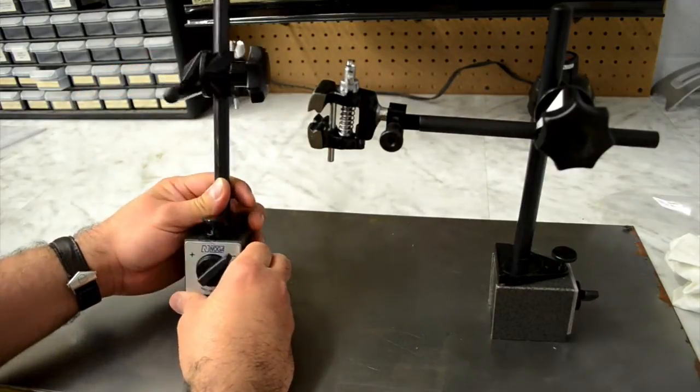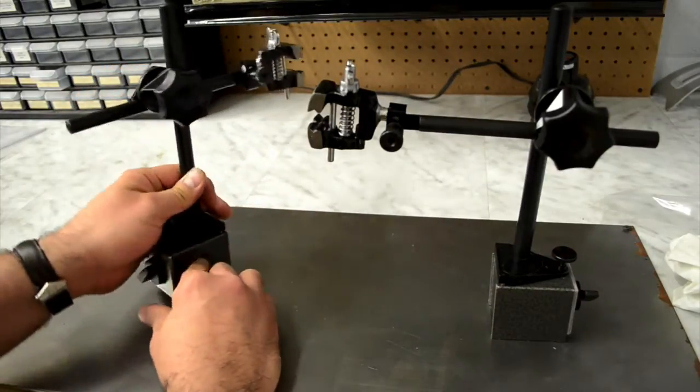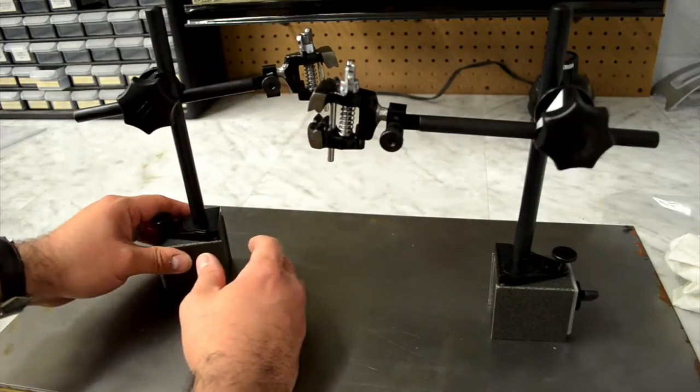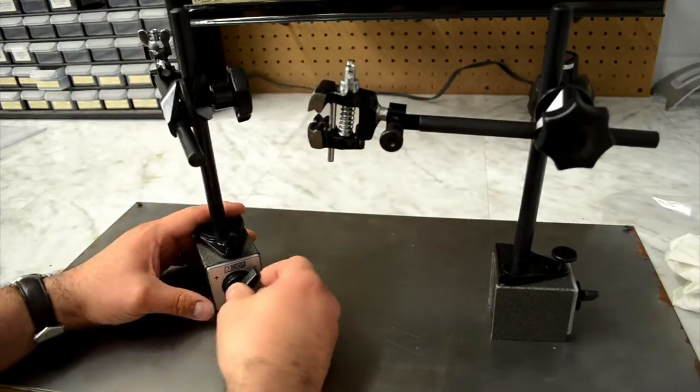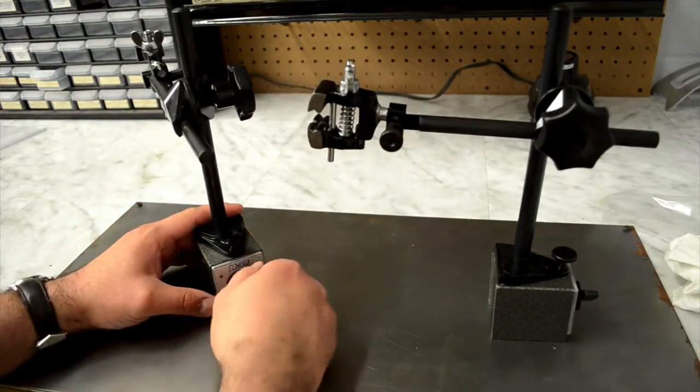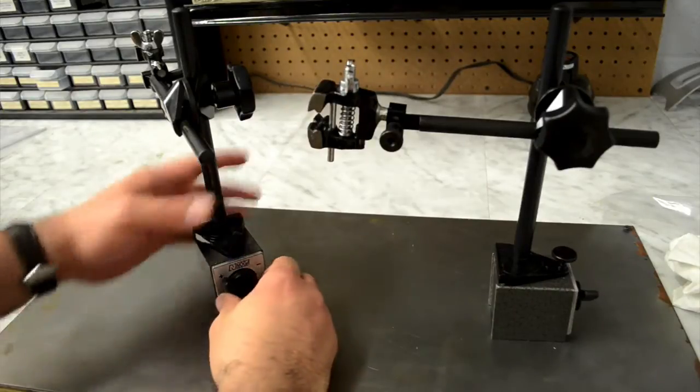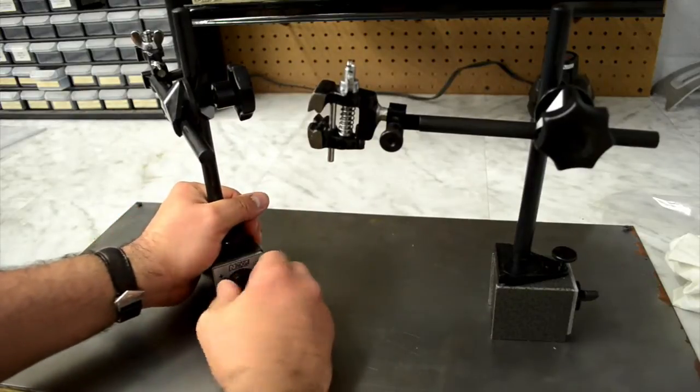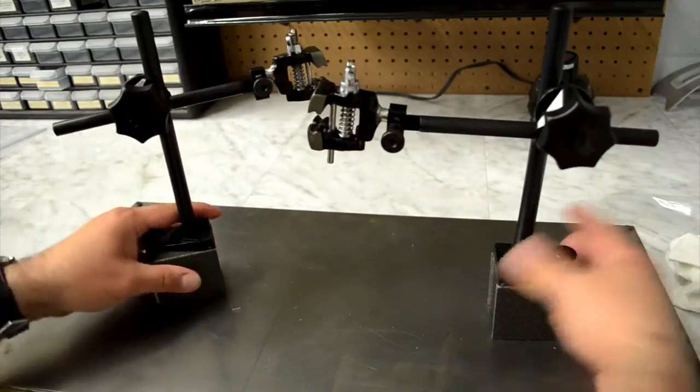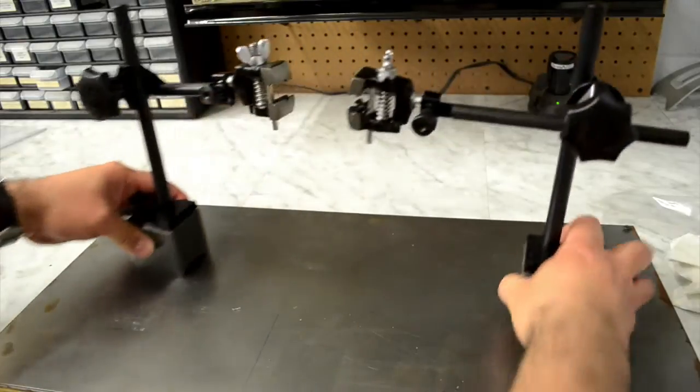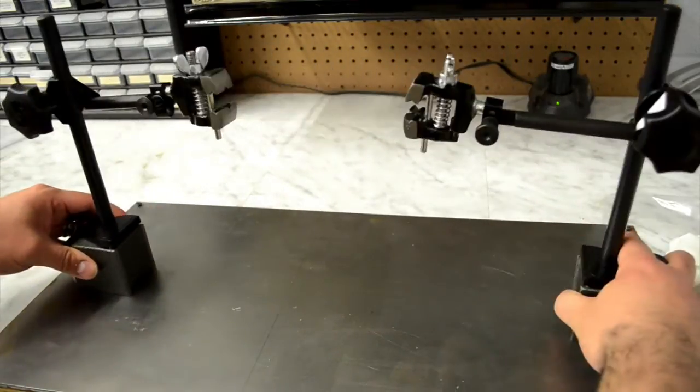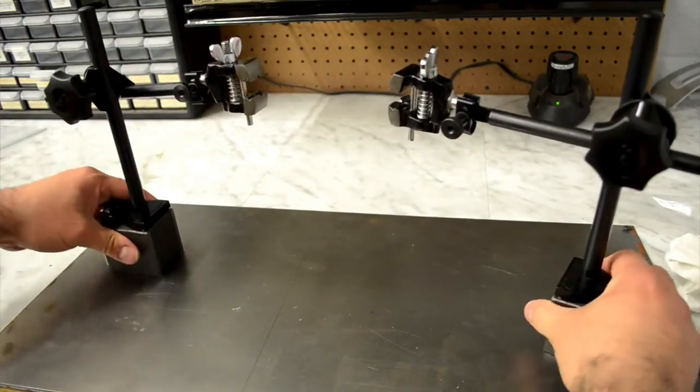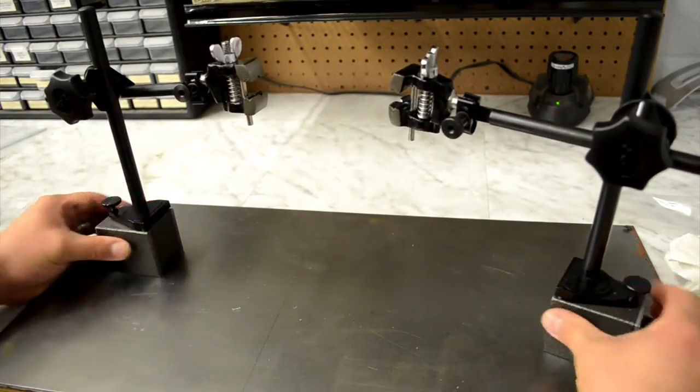I believe the company is out of Israel, but these are very good dial indicator stands. They have this switch where you can go from off to on. When you switch it on, the magnet activates and it's very firm. The cool thing about this is that I can move it around in any position that I want, get it close or further, and then lock them down.